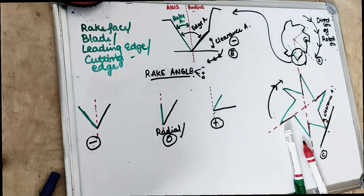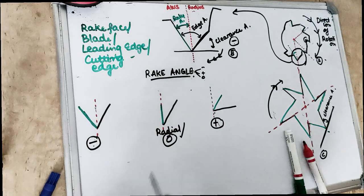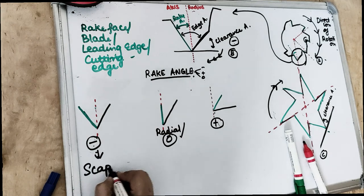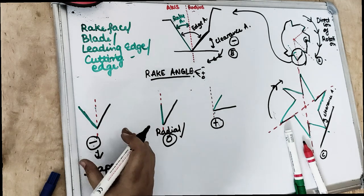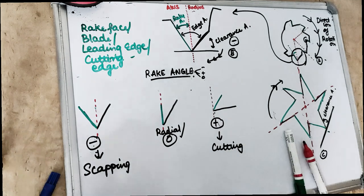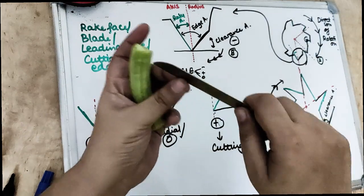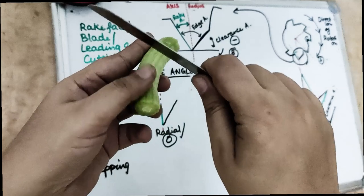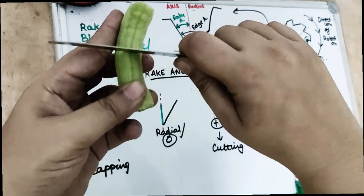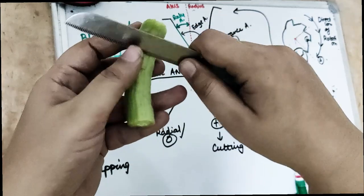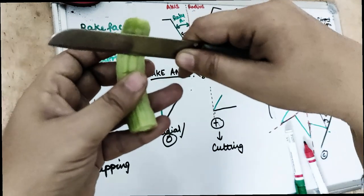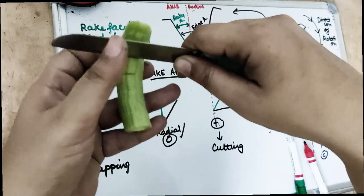Let me give you an example to explain this. The negative rake angle actually does the scraping action — scraping action is due to a negative rake angle. The positive rake angle means the file is doing the cutting action. So if this is the blade and this is the long axis — the radius — when the radius is ahead and the rake face is behind the radius, we are doing the cutting action.